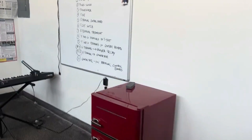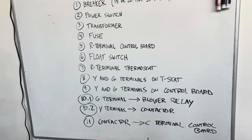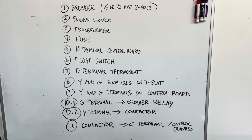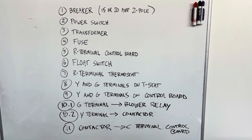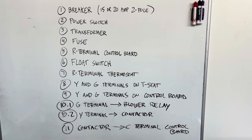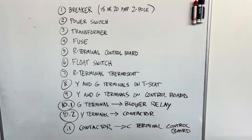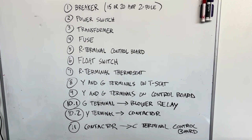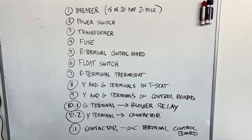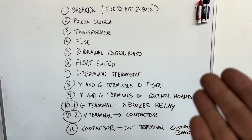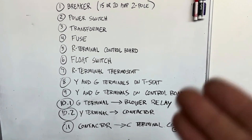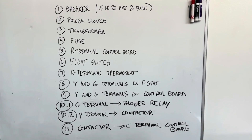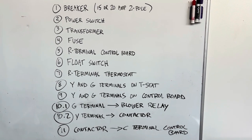Here is our sequence of a cooling system from beginning to end — these are all the steps. It's only about 12 steps. This is very good to keep on your phone if you're new and starting to diagnose systems, because this is the sequence we're going to use to diagnose and find a problem wherever it may be. I'm going to run you through this whole sequence on the board.